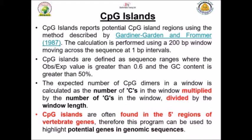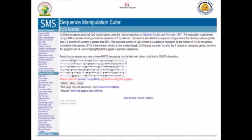This is very important because CpG islands are usually found in the 5' prime region of vertebrate genes. This method can actually be used as a tool to predict potential genes in a genomic sequence. So if you have a new sequence in vertebrates and would like to perform prediction for gene positions, this is very useful.